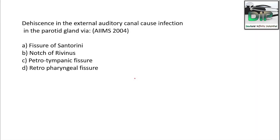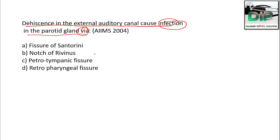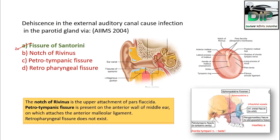Welcome to the YouTube channel Doctors Infinite Potential. Today we'll be discussing Part 7 of the MCQ series in ENT, topic being anatomy of ear. The dehiscence in the external auditory canal causing infection in the parotid gland — options: A) Fissure of Santorini, B) Notch of Rivinus, C) Petrotympanic fissure, D) Retropharyngeal fissure. This was asked in AIIMS 2004. Correct answer is Fissure of Santorini.